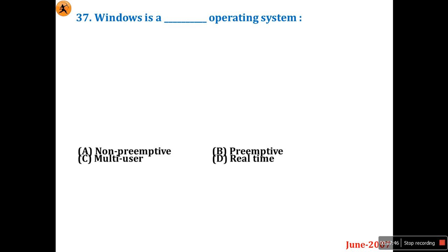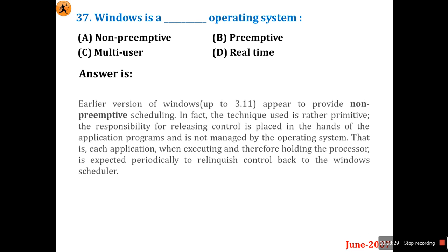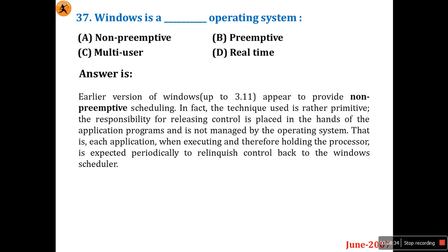Question 37: Windows is a what type of operating system — non-primitive, primitive, multi-user, or real-time? It is multi-user and also real-time, but regarding primitive vs. non-primitive: primitive means once a process starts execution it completes fully before moving on. Non-primitive works in a round-robin manner.